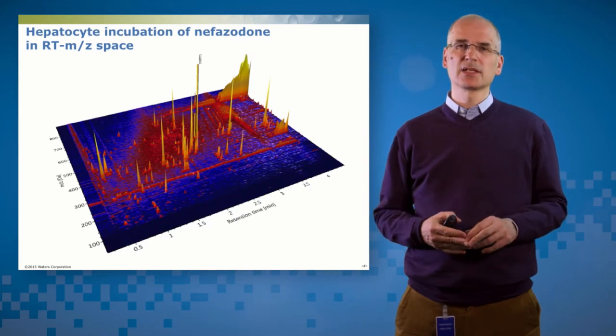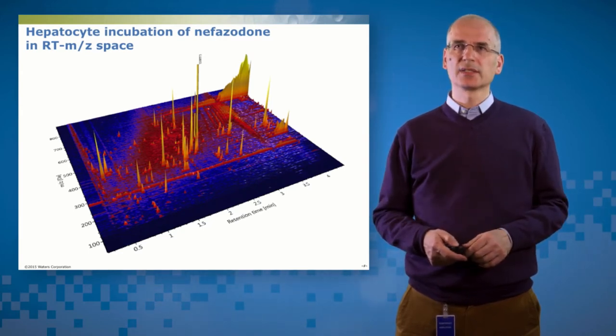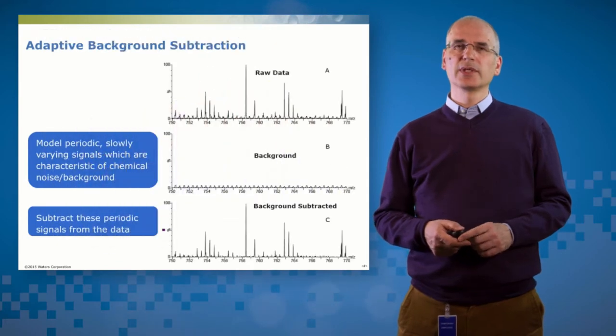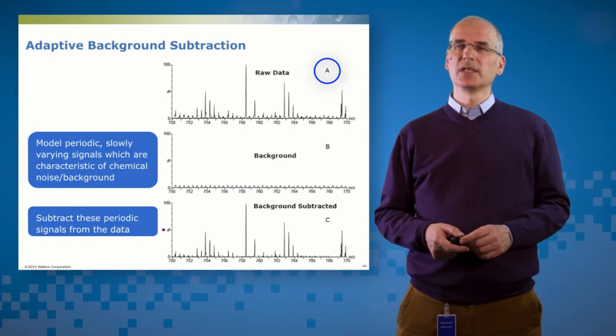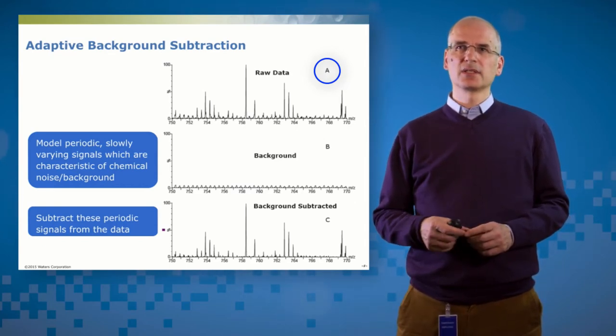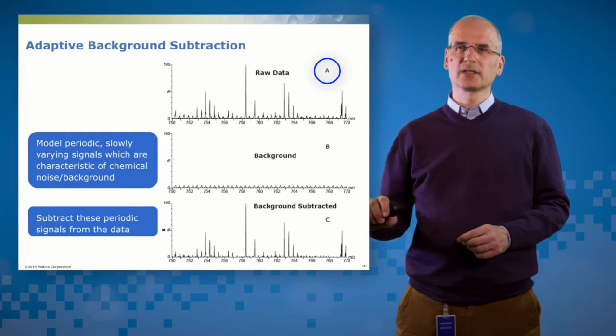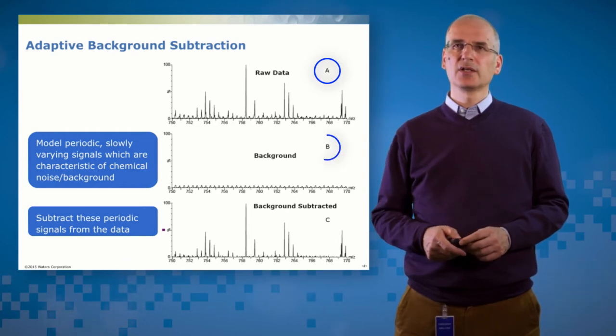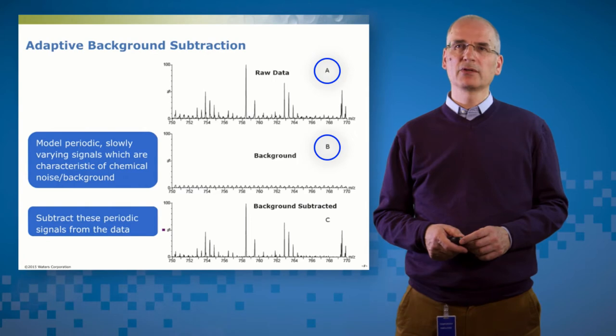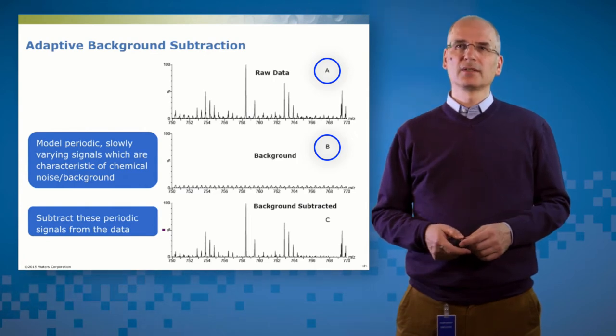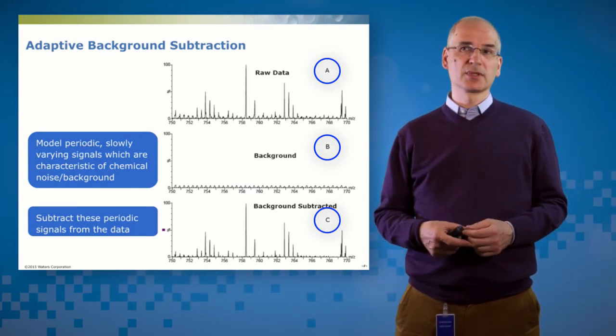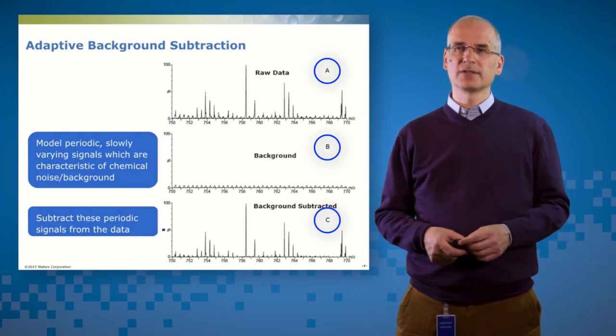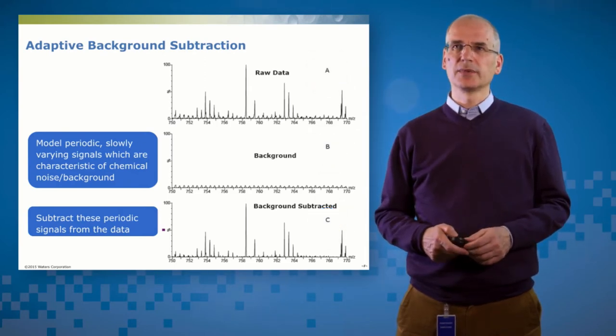So how can we address that challenge of noise? We want to maximize the signal that we have but we want to reduce the noise which is present. So one thing that we can do is called adaptive background subtraction. So on the top in panel A you can see a raw spectrum and inside that raw spectrum there are some consistently varying low-level signals which are very periodic and those are characteristic of the chemical noise in the background and we can create a mathematical model for those. Then we can subtract those periodic signals from the data to give you panel C. So that's the background subtracted spectrum and of course that's got a lower amount of noise in it.